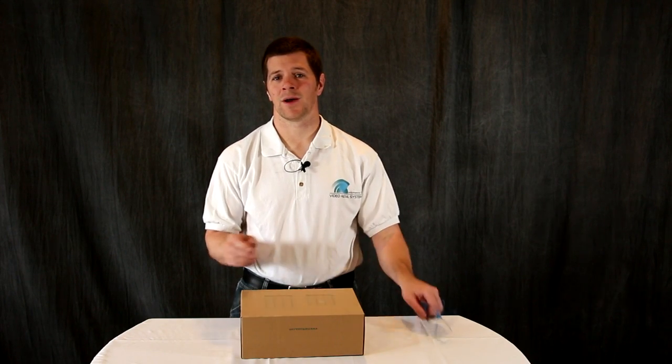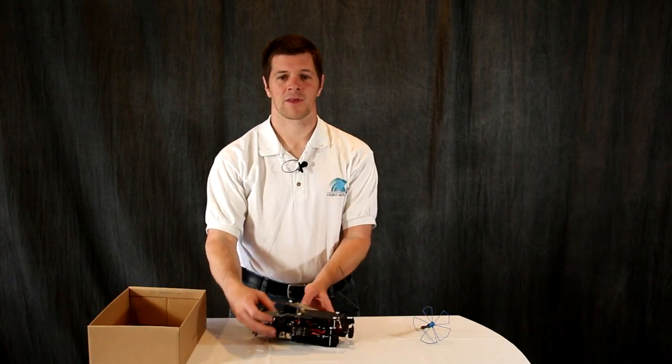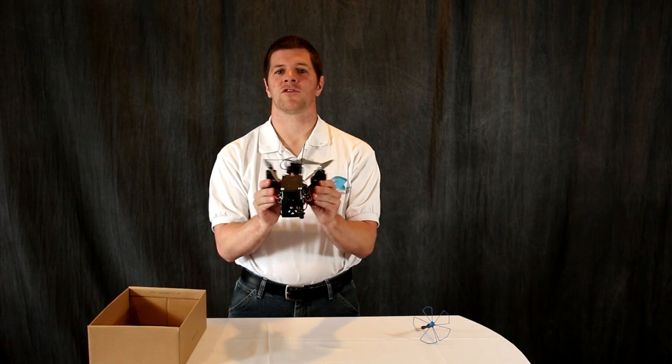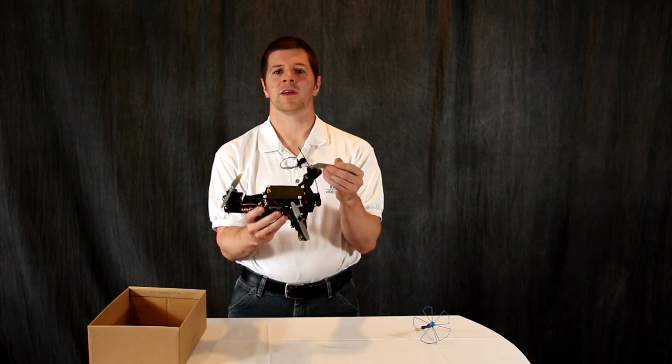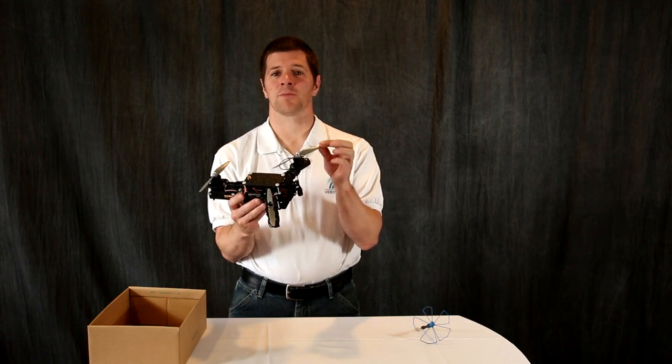Well, now we do. This is the Trident 250 foldable tricopter. The Trident 250 carries a six-inch propeller and a 2200 milliamp hour battery pack with a full FPV setup.